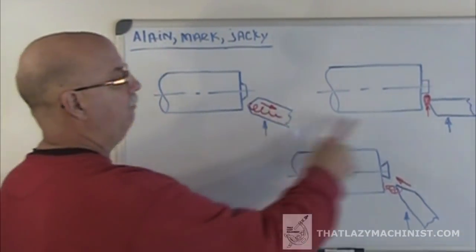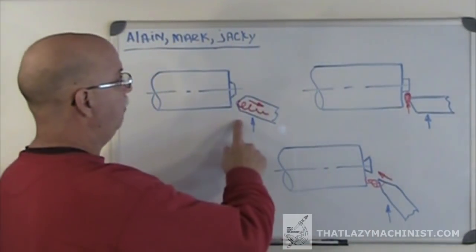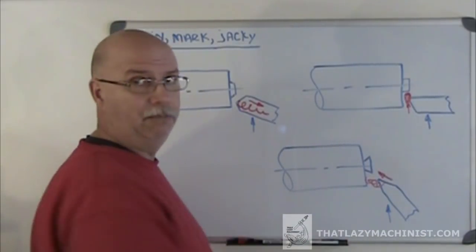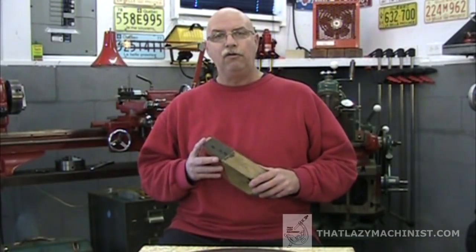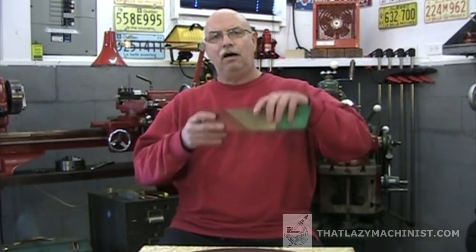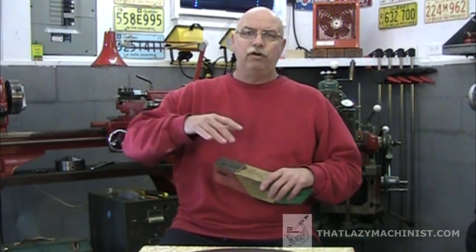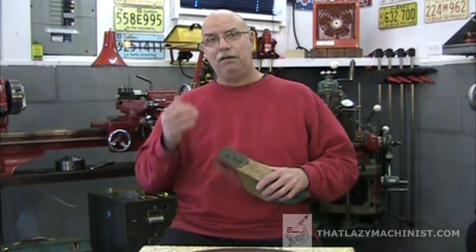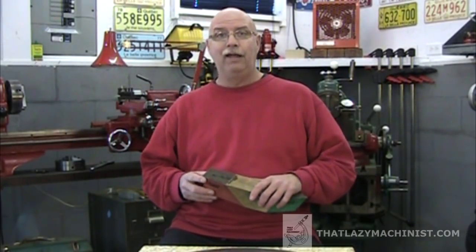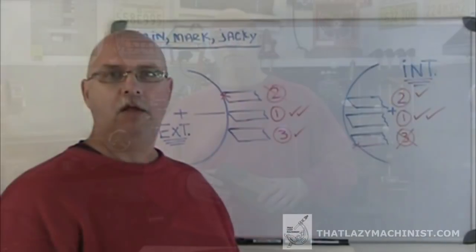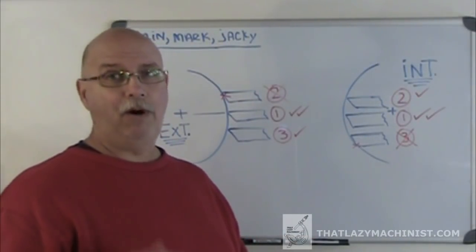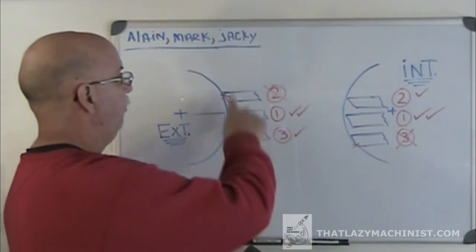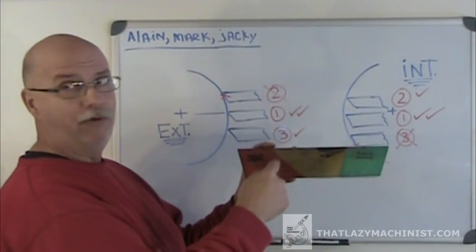When surfacing it's no different: positive, neutral, negative — a chip that curls away from the surface, a chip that curls onto itself, and a chip that curls into the surface. I also get a lot of questions concerning the height adjustment of a tool on external and internal turning operations, so let's head back to the whiteboard and take a look at that in a little more detail.